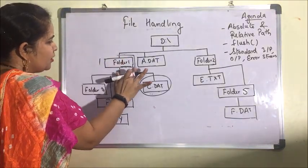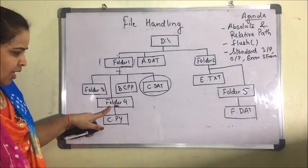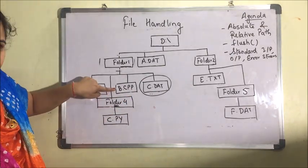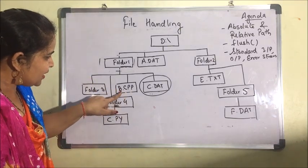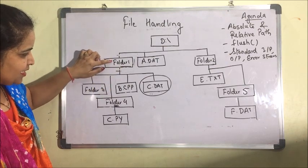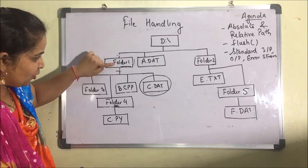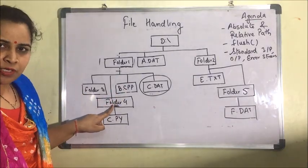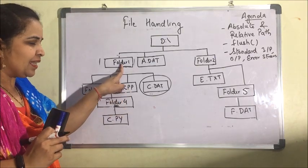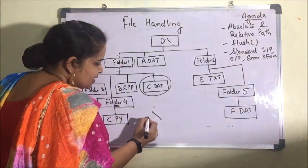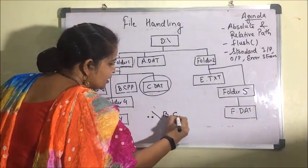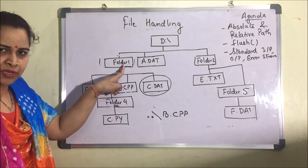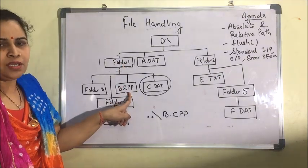Suppose I am currently in folder four and I want to access a file that is in folder one, which is the parent of folder four. This file is in the parent directory of the current directory. So we write backslash with double dot, then b.cpp. The double dot means: go to the parent of the current directory, and there exists the file b.cpp.